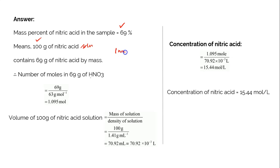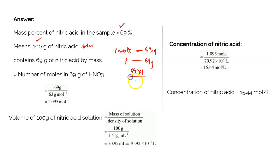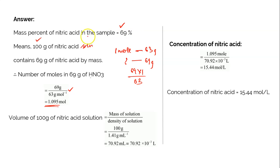If it is one mole of HNO3 it would be 63 grams, but you are having 69 grams right now. So how many moles is it? Cross multiply: it is 69 into 1 divided by 63, which on simplification gives you 1.095. So this is the number of moles of HNO3, calculated from the mass percent of nitric acid. So now we know the number of moles.